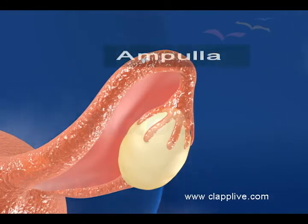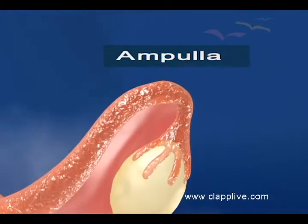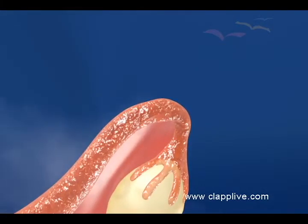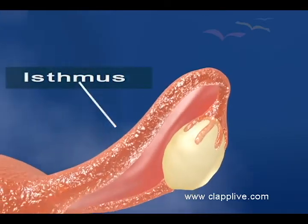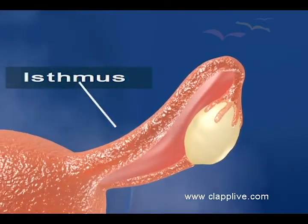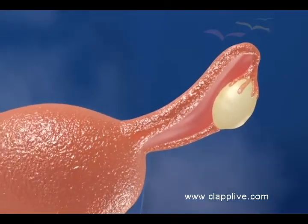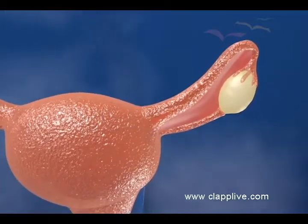Ampulla is the wider part of the oviduct next to the infundibulum. It is lined by ciliated epithelium. Isthmus is the short, narrow, and straight part that follows the ampulla and connects with the uterus.